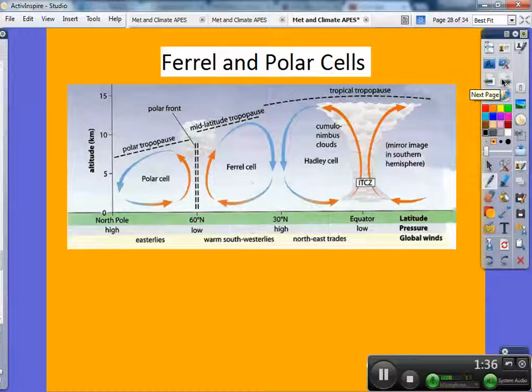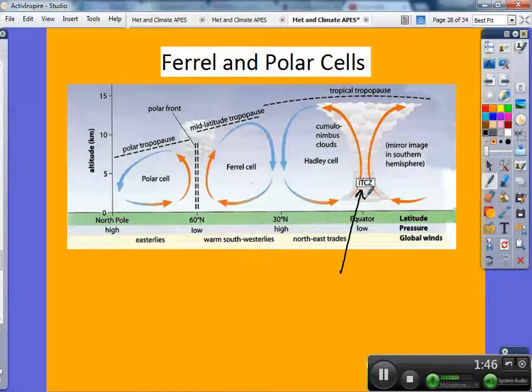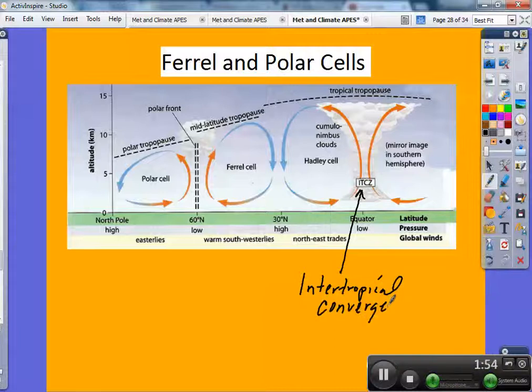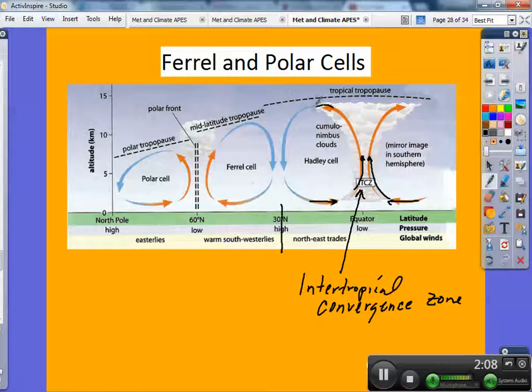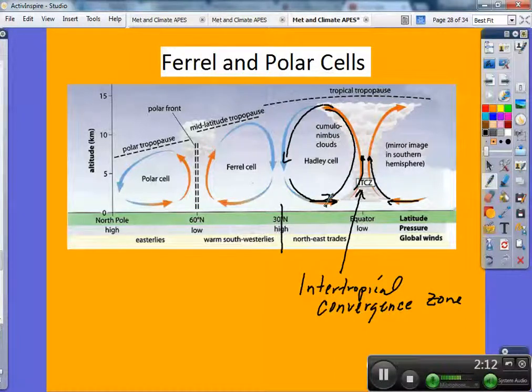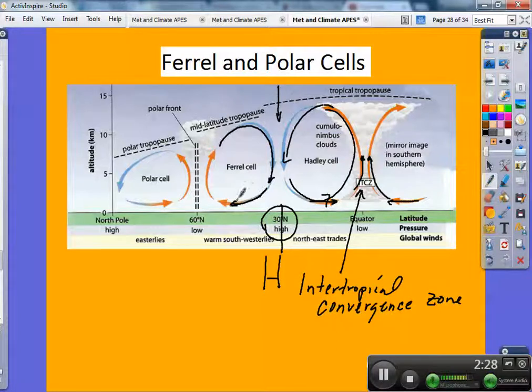Now what we're going to look at is global circulation. When we start talking about these Ferrel and polar cells, notice here is our Hadley cell. This ITCZ stands for Intertropical Convergence Zone, which makes sense because we see air converging here at the equator and then it rises. Here's 30 degrees north and here's the end of this large Hadley cell. Then we've got another convection cell taking place bordering right next to the Hadley cell. We have an area of surface high pressure here at 30 degrees north latitude. So we've got surface divergence here creating this cell.